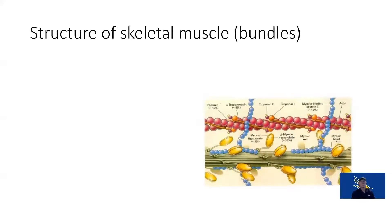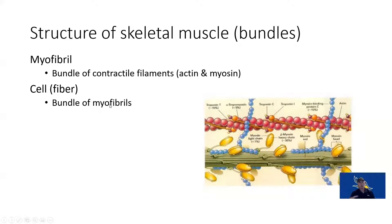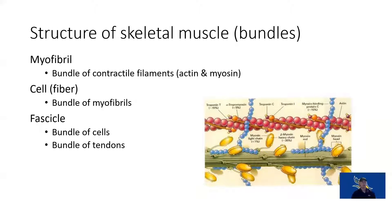Looking more closely, our myofibril is our bundle of actin and myosin. The muscle cell and muscle fiber are the same thing — one muscle fiber is one muscle cell, which is a bundle of myofibrils, which is a bundle of contractile proteins. The fascicle is a bundle of muscle cells. For this class, we focus on the bundle of muscle fibers, which is a bundle of myofibrils, which is a bundle of actin and myosin.